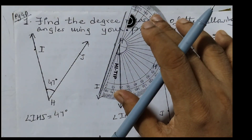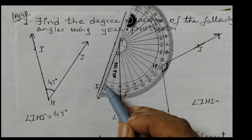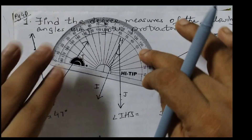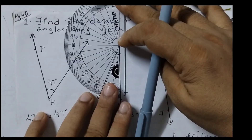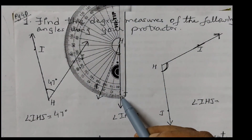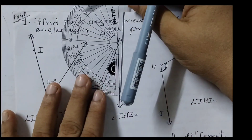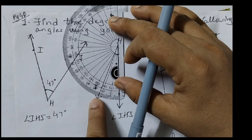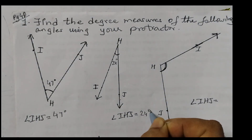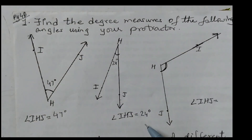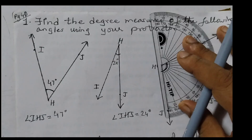Next one — again we can place the protractor like this to measure. The reading always starts from 0. If you're taking it one way, start from the inner set of numbers: 0, 10, 20 like that. If placing it the other way, see where 0 is — inner set or outer set. Here we have the outer set, so the reading starts from 0, 10, 20. This angle measure is approximately 24 degrees; angle IHJ is 24 degrees.